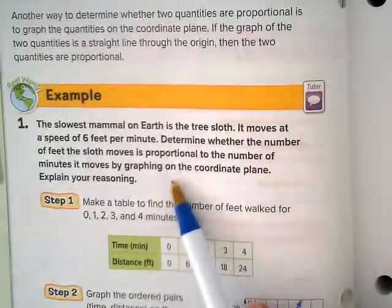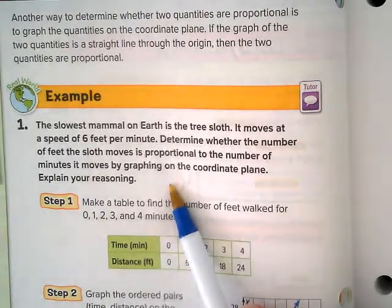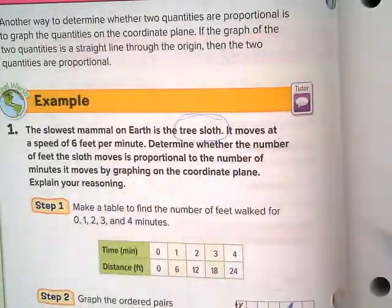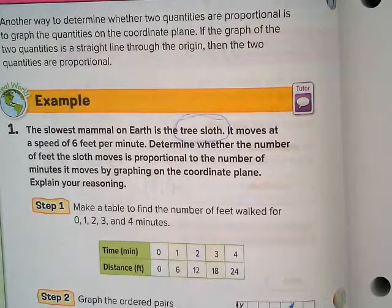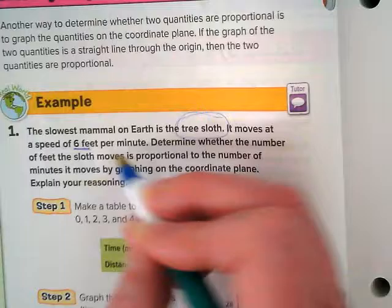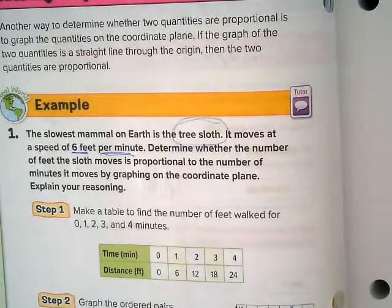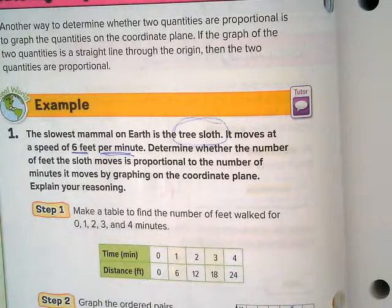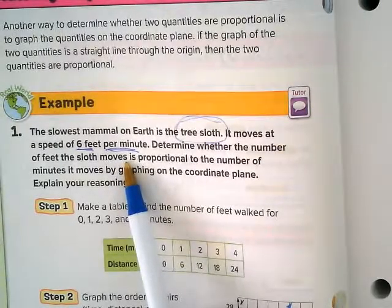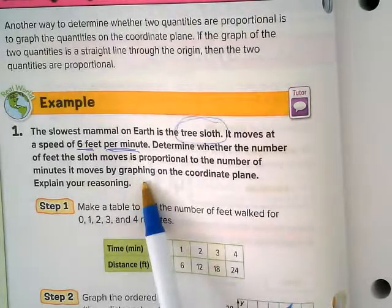The first example is about the slowest mammal on earth, the tree sloth. They're actually pretty cute. When you get on your Chromebooks, you might Google tree sloth images. They move really slowly at a speed of 6 feet per minute. That's our rate right there, comparing feet per minute. We're going to determine whether the number of feet a sloth moves is proportional to the number of minutes it moves by graphing on the coordinate plane.